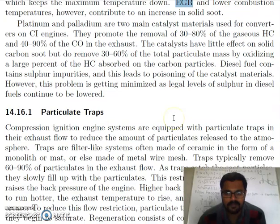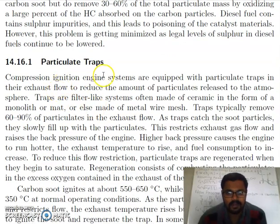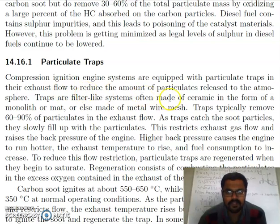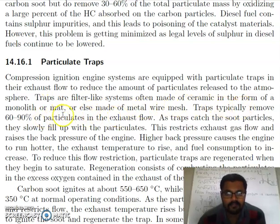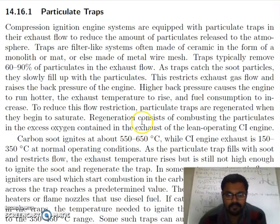We will start with particle traps. Compression engine systems are equipped with particle traps in their exhaust flow to reduce the amount of particulates released to the atmosphere. Traps are filter-like systems, often made of ceramic in the form of a monolith or mat, or made of metal wire mesh. Traps typically remove 60–90% of particulates in the exhaust flow. Carbon soot particles ignite at 500 to 650 degrees Celsius, while CI engine exhaust is 100 to 350 degrees Celsius.